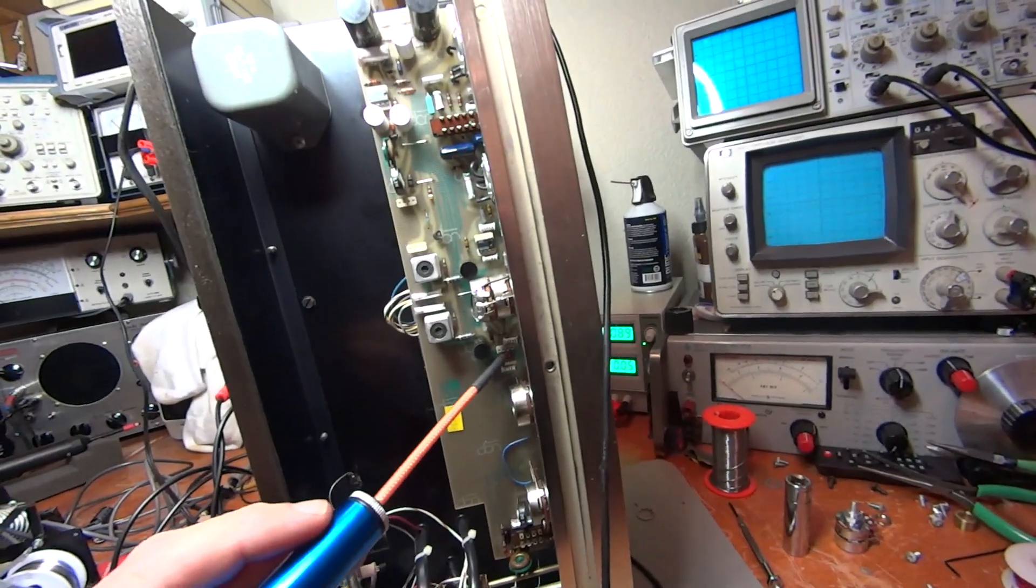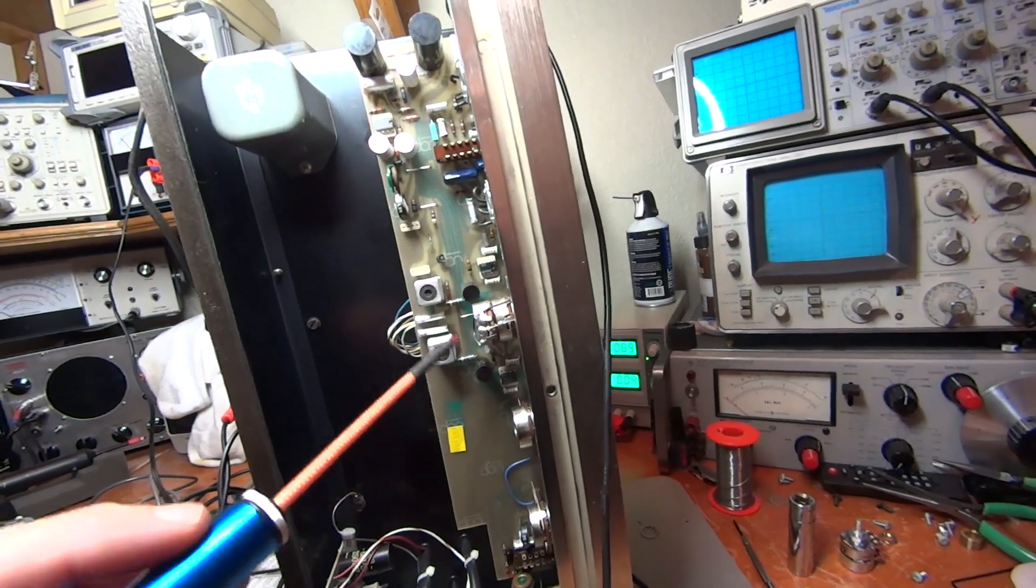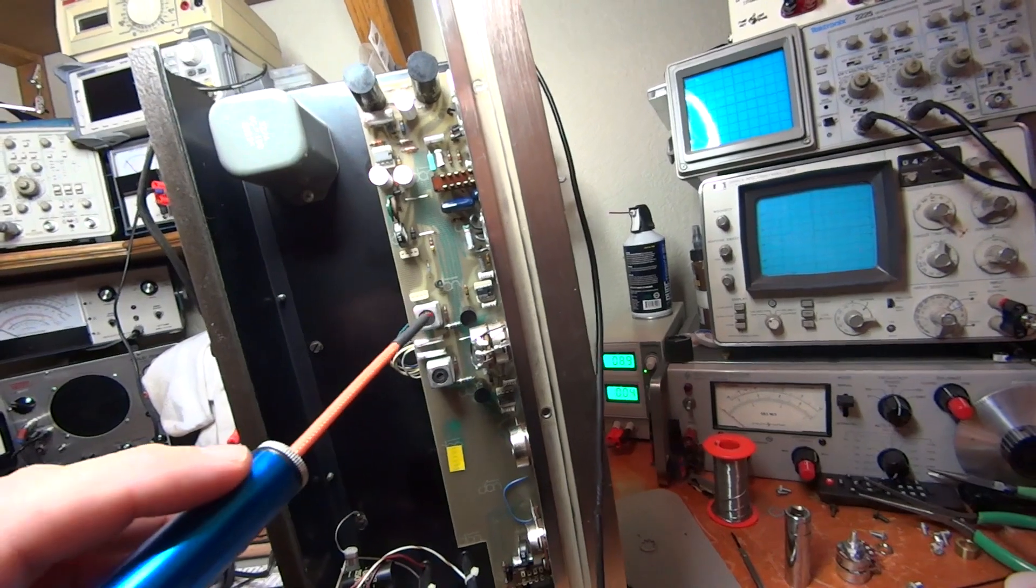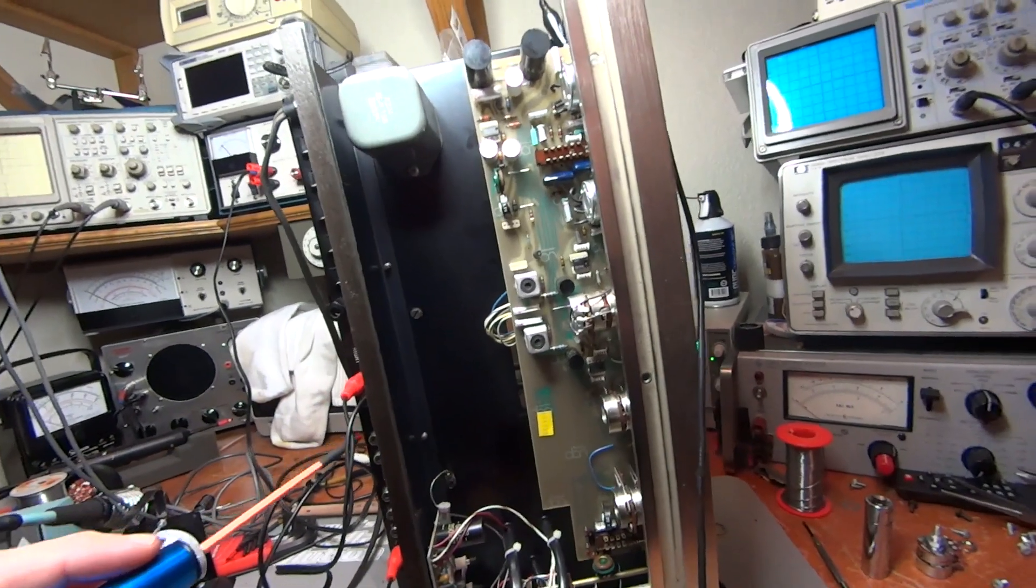Signal on the ICs, signal on the 25 microfarad capacitors, signal on the 560 ohm resistors, signal on the inductors, and signal to the output. So we're all squared away here.